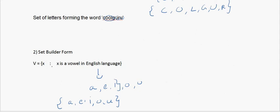The way you read this set builder notation is: 'V is defined as the set of all x such that x is a vowel in English language.' The colon symbol is read as 'such that.' If you take this definition and start substituting values back, you get {a, e, i, o, u} — the same result as in the roster form.